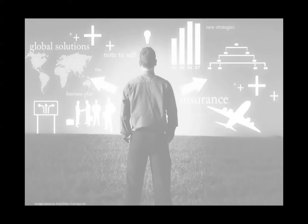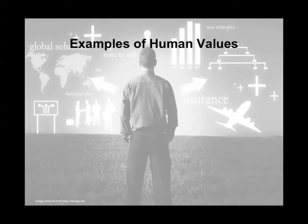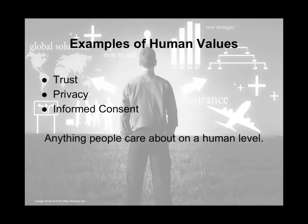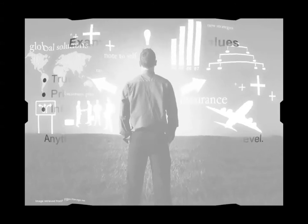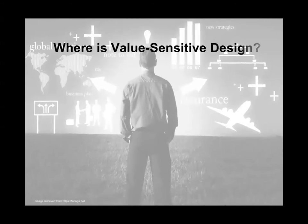Suppose you told a friend a secret. You trust them not to post it all over Facebook and Twitter. It's a private matter, and they know that before telling anyone, they should ask if you're okay with it. This situation highlights examples of human values, such as trust, privacy, and consent.